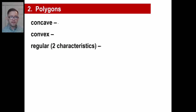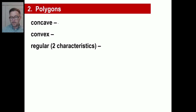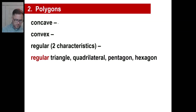A regular polygon has two characteristics. An equilateral polygon means all the sides are the same. Equiangular means all the angles are the same. A regular polygon has both: all the angles are the same measure and all the side lengths are the same. A regular triangle has all sides and angles the same. A regular quadrilateral — a four-sided figure — is a square. A regular pentagon has all sides and angles equal, and same for a regular hexagon. Those are all regular polygons.